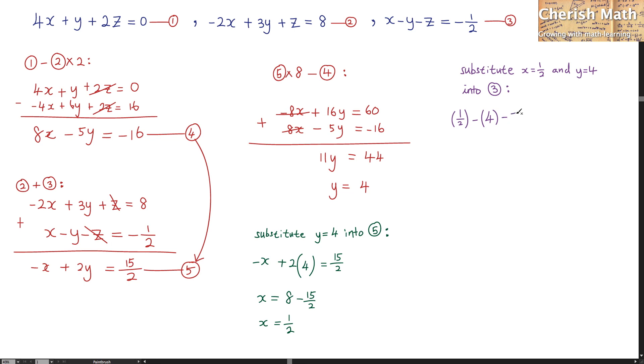and minus z gives negative 1 half and we can find what is the value of z easily. And now the value of z is negative 3 and we solve all three variables x, y, and z in this question.